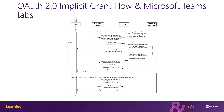The user on the identity provider's site signs in and grants access to the required permissions defined in the application's configuration to the custom tab. The identity provider then redirects the user to the tab's OAuth2 redirect page with an access token. The tab checks that the returned state value matches what was saved earlier, and the tab calls Microsoft Teams.authentication.notifySuccess, which calls the success callback function registered in the initial setup. Microsoft Teams closes the pop-up window, and the tab either displays the configuration UI or refreshes and reloads the tab's content based on where the user started.